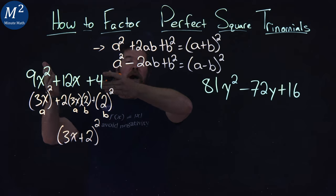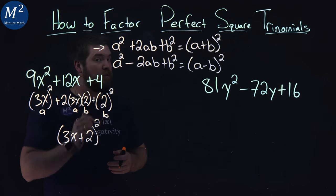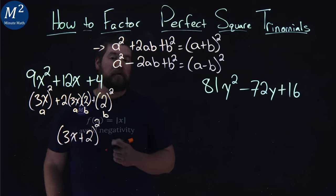And there we have it. We factored our first trinomial, 9x² + 12x + 4, to get (3x + 2)².